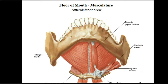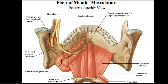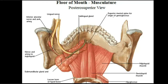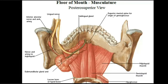The mylohyoid is the main muscle forming most of the floor of the oral cavity. Looking at the next slide, you see the mandible and the inner surface of its body, the ramus of the mandible with the mandibular foramen. Here is the inferior alveolar nerve and artery entering the foramen. They give rise to the nerve and artery to mylohyoid, which run in the mylohyoid groove and pass to the inferior surface of the mylohyoid muscle, supplying it.